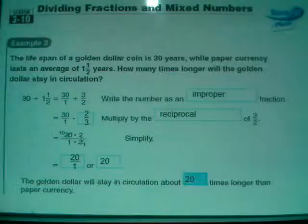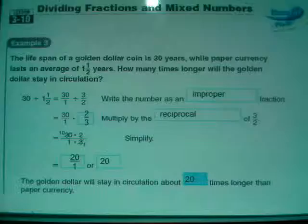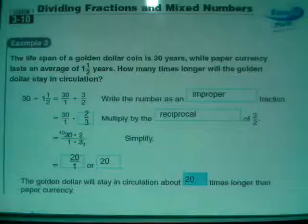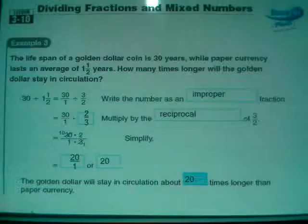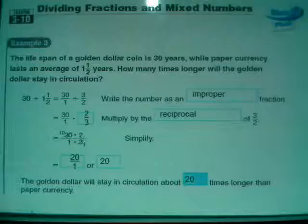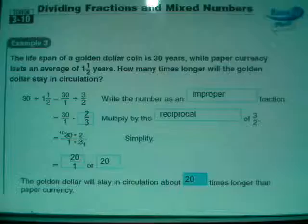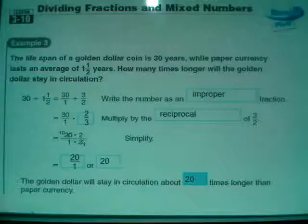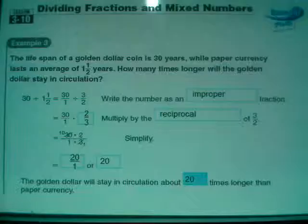Here's the story problem. We're not going to panic because it's in the section about dividing, so chances are they're going to ask us to divide. The lifespan of a golden dollar coin is 30 years, while paper currency lasts an average of 1 and 1 half years. How many times longer will the golden dollar stay in circulation? We're figuring out how many times we can feed 1 and 1 half into 30, and the way to do that is 30 divided by 1 and 1 half.